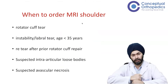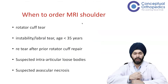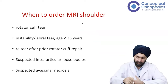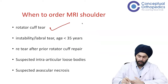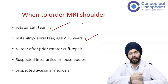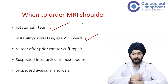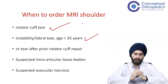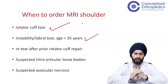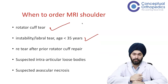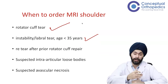Shoulder MRI is a very important investigation and you need to order it when you're suspecting a rotator cuff tear or a labral pathology in a patient having instability — anterior, posterior, whatever. So these are the two main indications: cuff pathologies and labral pathologies, when you order a shoulder MRI.